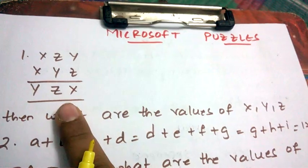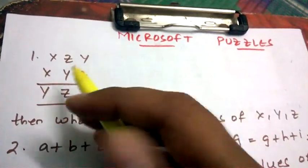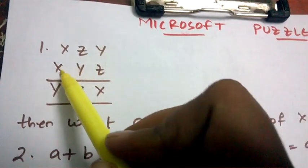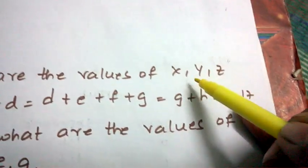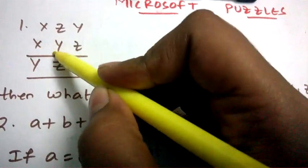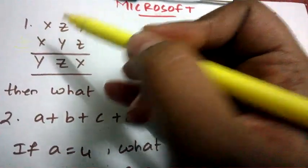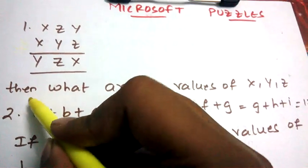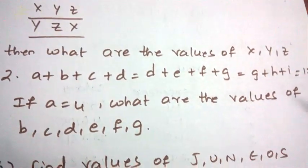The first most common and important question in the written test will be a cryptarithmetic sum. The sample problem given is: XZY + XYZ = YZX. Then what are the values of X, Y, Z? Note that they haven't even given the operation symbol — whether it is plus, minus, or whatever — and they ask us to find the values of X, Y, Z. These kinds of complicated questions will also appear in exams, so you must prepare well.